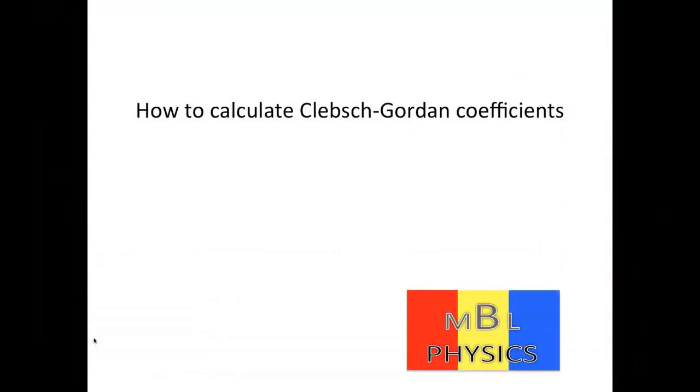Today, we'll learn how to calculate Clebsch-Gordan coefficients looking at a specific example. Given J1 equal to 1 and J2 equal to 1, we are asked to derive the Clebsch-Gordan coefficients for |1,0⟩.